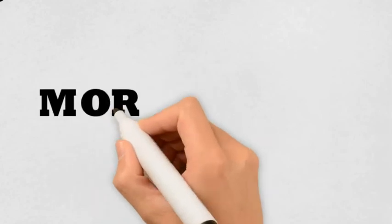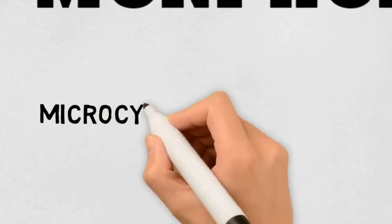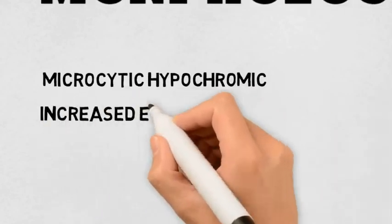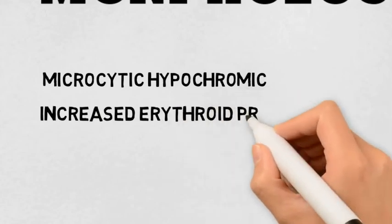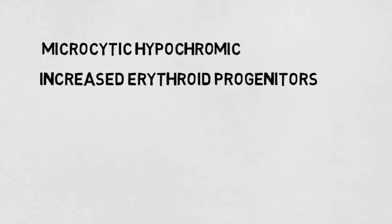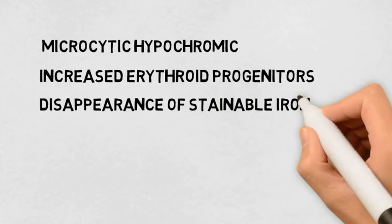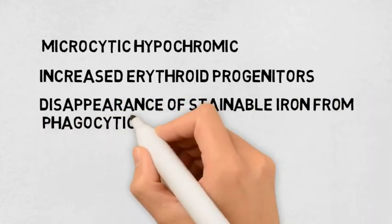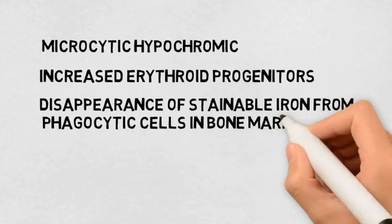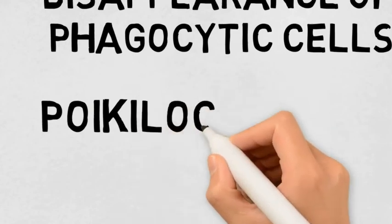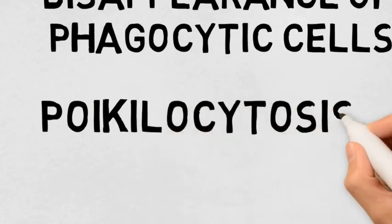Now the most important part: morphology. Microcytic hypochromic means the cells will be smaller than normal and will contain less hemoglobin than normal. There is increased erythroid progenitors, i.e., increased normoblasts. There is disappearance of iron from the phagocytic cells of the bone marrow — when you stain it, you will not see iron present. Poikilocytosis, i.e., pencil-shaped cells — small and not rounded.